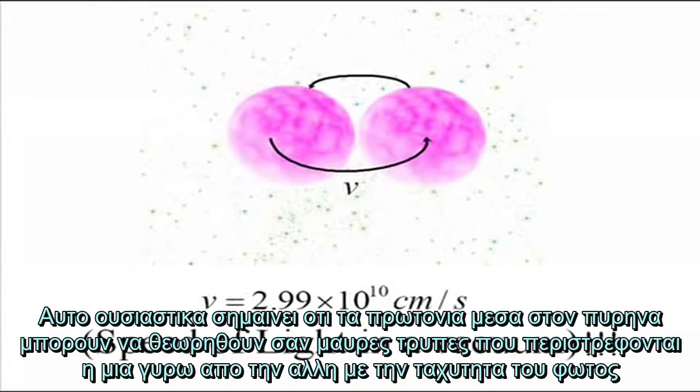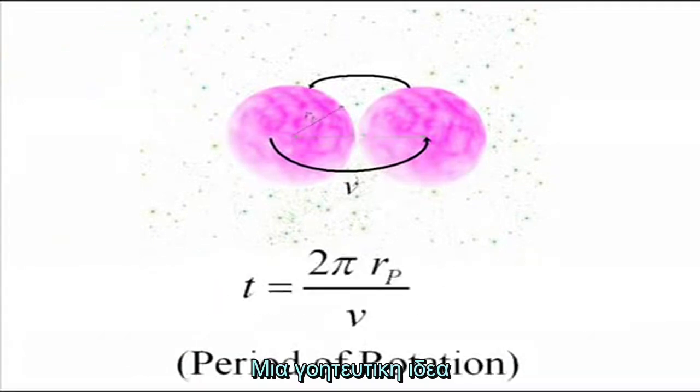This essentially means that the protons inside of a nucleus can be thought of as black holes orbiting each other at the speed of light. A fascinating concept.